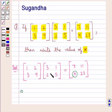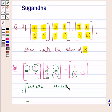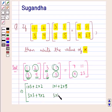Now let us multiply the two matrices on the left-hand side. We get a matrix of order 2 by 2. The elements of this matrix are: the first element of the first row is 1 into 3 plus 2 into 2; the second element of the first row is 1 into 1 plus 2 into 5; the first element of the second row is 3 into 2 plus 4 into 2; and the second element of the second row is 3 into 1 plus 4 into 5.